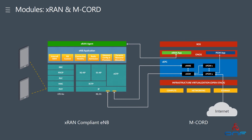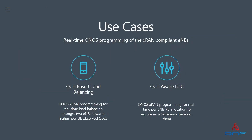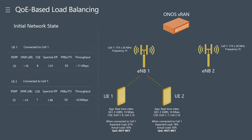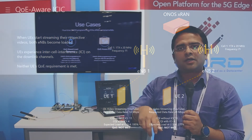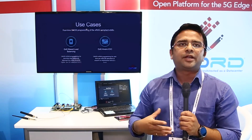The two use cases we are demonstrating today are mostly about quality of experience. We want to make sure the end user's experience is guaranteed. The two use cases are load balancing and intercell interference. There are two cells reporting their current load to the XRAN controller, and based on the real-time load situation, it will move a couple of UEs from one RAN to the other. Similarly, in the second use case, UEs bound to the same cell experiencing interference are detected by the XRAN controller, which will move a couple of UEs from one cell to the other to handle the interference.